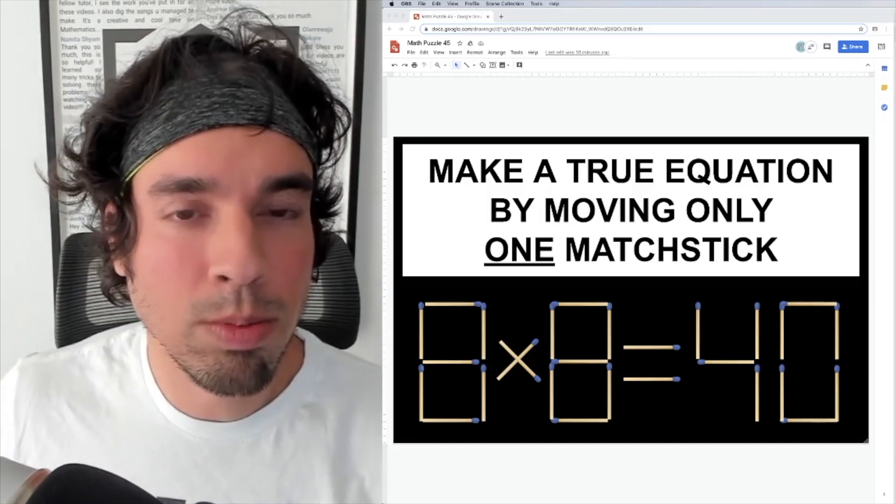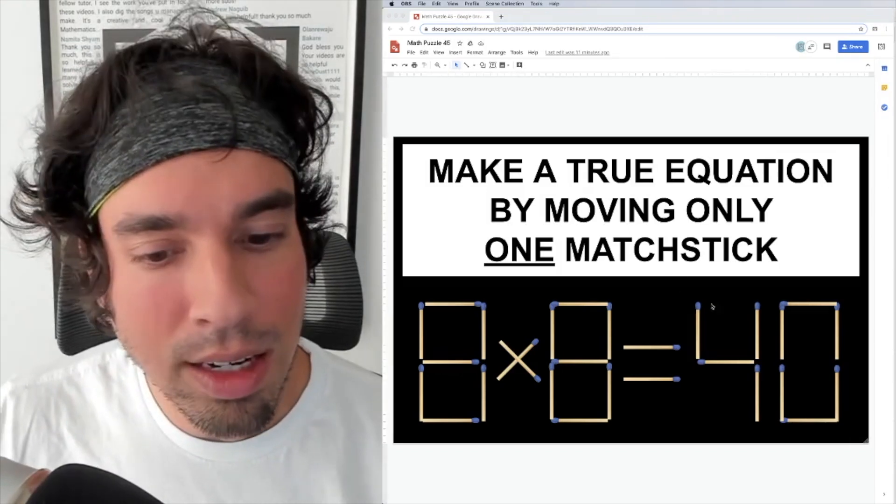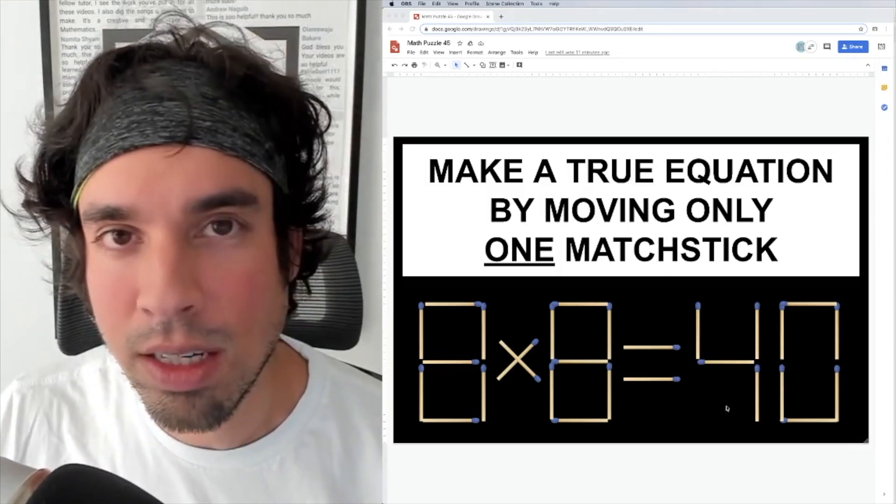So I'm thinking what multiples of eight are easy to get from one move. And what I can see is if I cross this off, I get a 48.